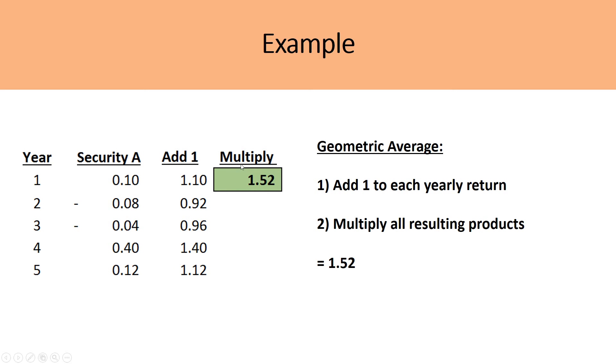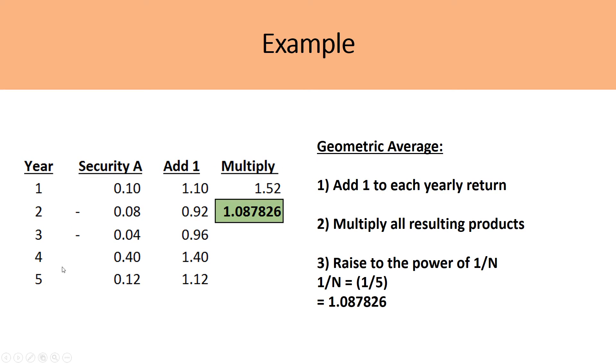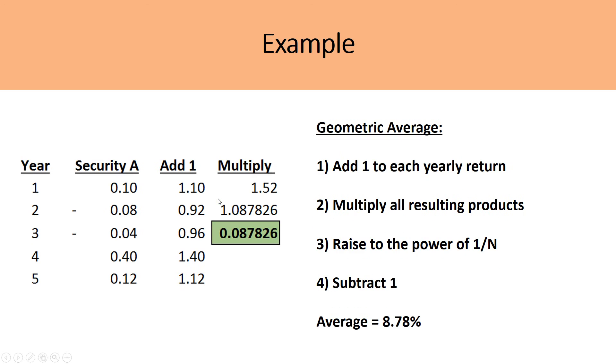After doing this, we simply raise it to the power of 1 over n, which in this case, it's a five-year period. We raise it to the power of 1 over 5 to get a net value of 1.087826. Now to find the percentage, we simply take away 1 to get 0.087826, or in percentage format, 8.78%. So that's how you calculate the geometric average.